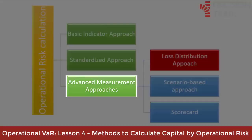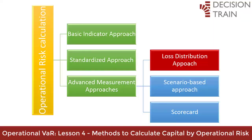Under AMA, banks can develop their own empirical model to quantify the capital required for operational risk. Banks can use this approach only subject to the approval of their local regulators. Once a bank has been approved to adopt AMA, it cannot go back to a simpler approach without supervisor approval.